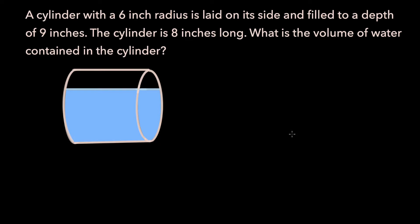In this video, we will be going over the following problem. A cylinder with a 6 inch radius is laid on its side and filled to a depth of 9 inches. The cylinder is 8 inches long. What is the volume of the water contained in the cylinder?